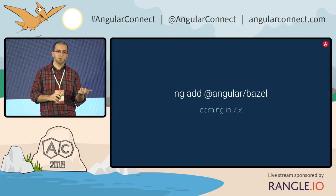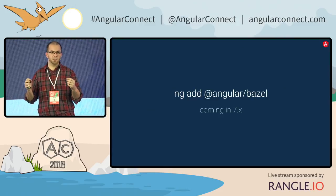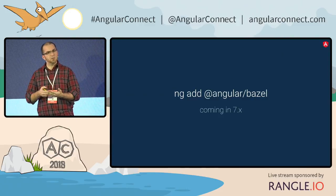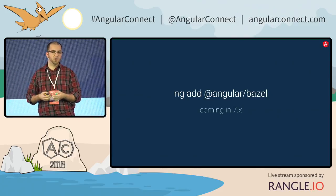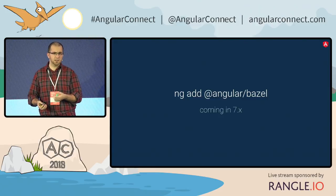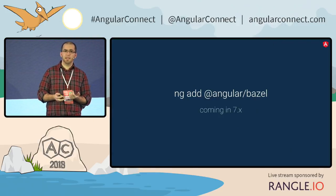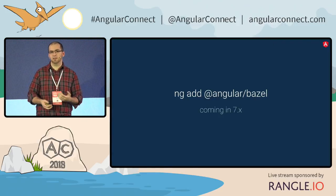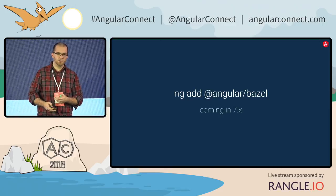If you have an existing project, you can also convert your project. In the example of adding Angular Material, when you add it, a bunch of your files are changed — we add the styles, we add configuration to angular.json, we add the animations module, we add any imports needed. When adding Bazel, we'd be aiming at doing the same thing. Any configuration in any files that would need to be changed, we do that for you, so that you could add it and then keep on working as you were working roughly before.